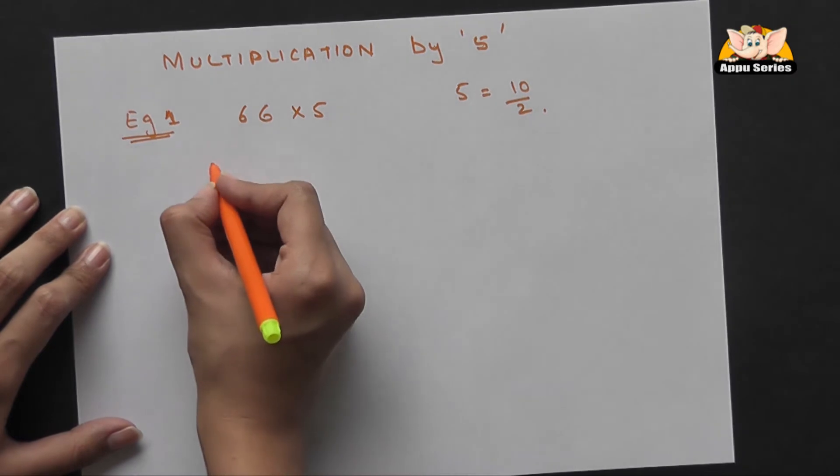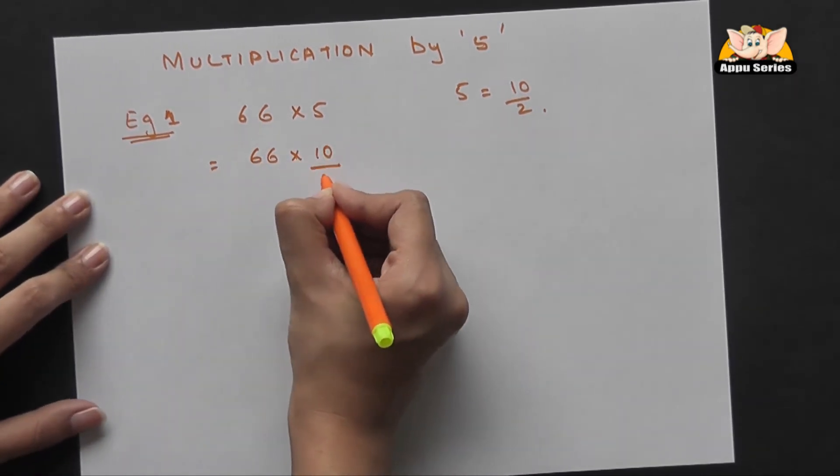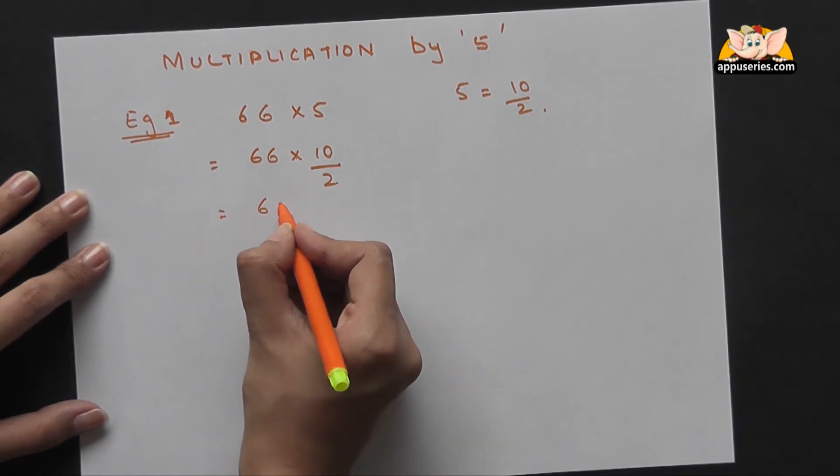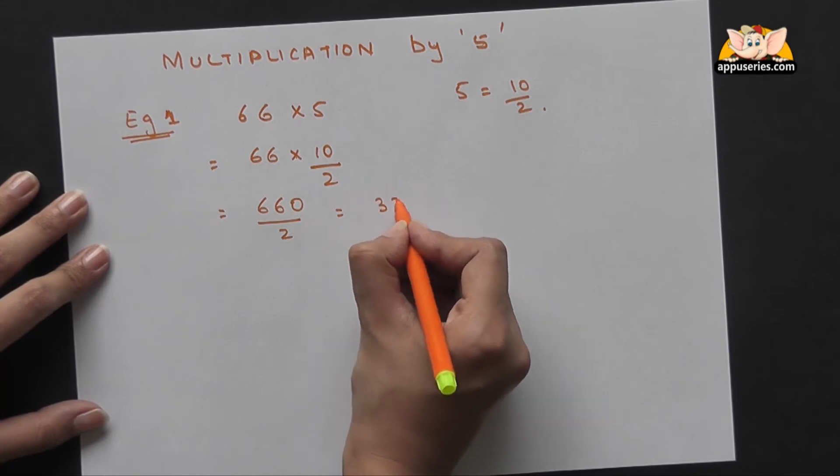So we have 66 into 10 by 2, which is 660 by 2, which gives you 330.